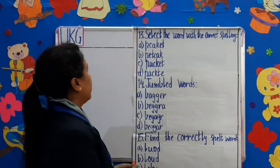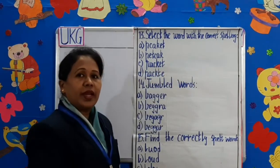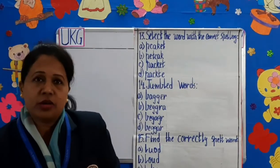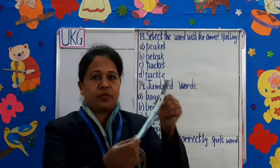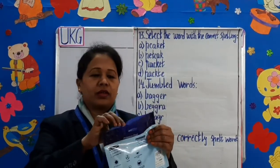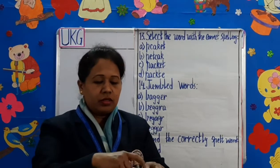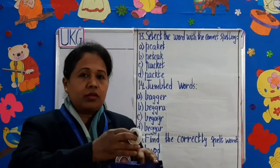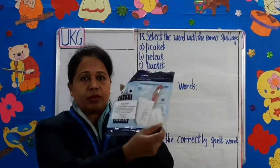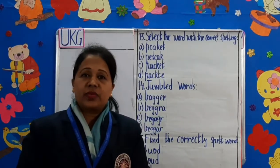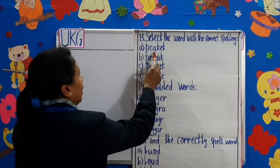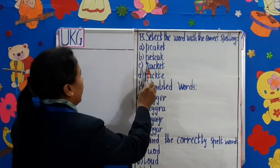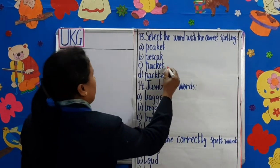Question number 13: Select the word with the correct spelling. Children, four options are given. What is it? Yes, it is a packet. What can you keep in a packet? I have kept some papers; we also can keep scissors, pen, cellotape or anything. Let's choose the correct spelling of packet. Should it be P-C-A-K-E-T? No. Should it be P-E-T-C-A-K? No. Should it be P-A-C-K-E-T? Yes. So, we will put a tick on it.